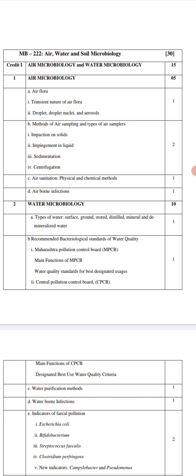Hello students, from today we are going to start our semester two lectures. I'll be taking your paper second, that is MB222 - Air, Water and Soil Microbiology. Your syllabus has been changed and there is a credit system pattern. Credit one consists of air microbiology and water microbiology, and credit two consists of soil microbiology. In this video we are going to discuss the syllabus for semester two.